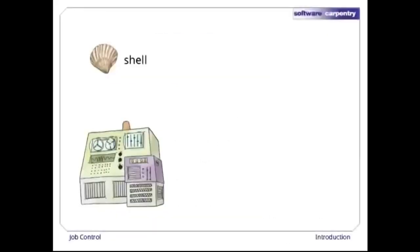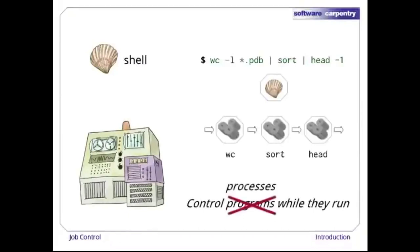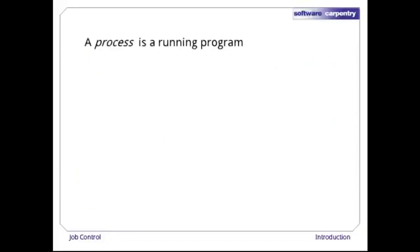We're looking at how to control a computer using a command-line shell. We've seen how to use pipes to combine programs, which tells the shell to use the output of one as the input of the next. What we'll look at in this episode is how to control programs once they're running — really, how to control processes. A process is just a running program.